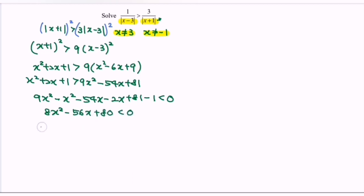Now factor out the 8. So we have 8(x²-7x+10) less than 0. Precaution: before factorizing the situation, make sure it is the simplest form.